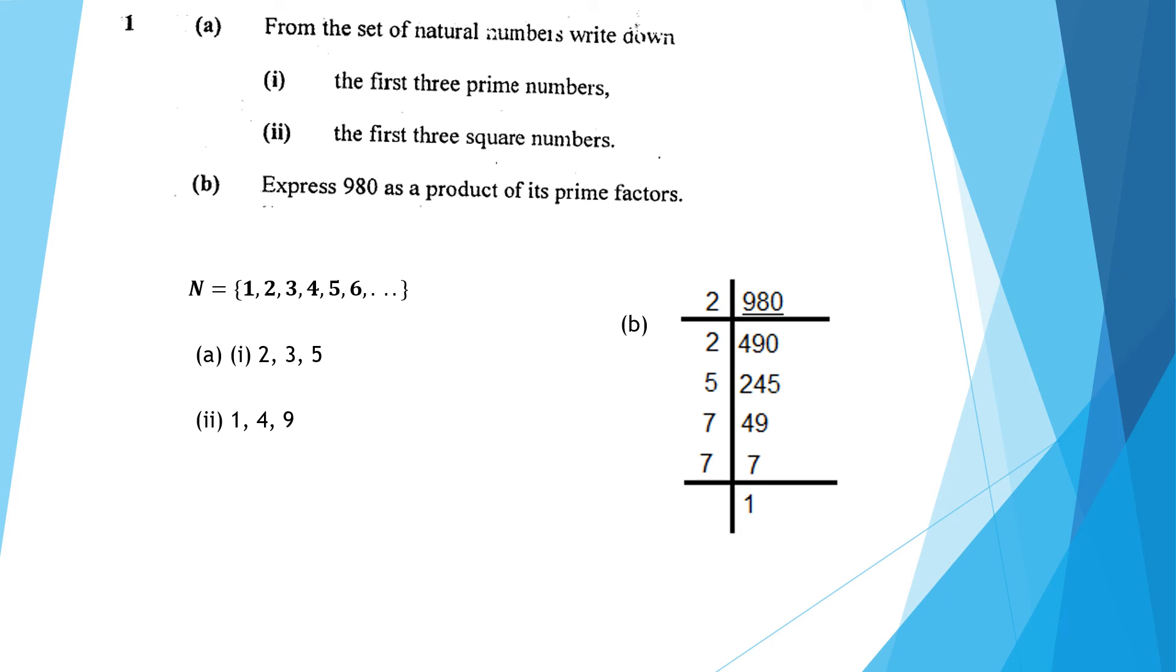49 is not exactly divisible by 5, so we move to the next prime number, which is 7. 7 divides 49 to give 7, and 7 divides 7 to give 1.